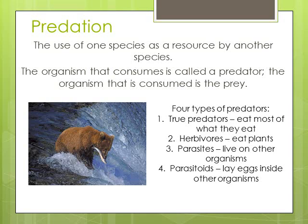Predation involves two organisms, the predator and the prey, and is defined as the use of one species as a resource by another species. There are four types of predators: true predator, herbivore, parasite, and parasitoid.